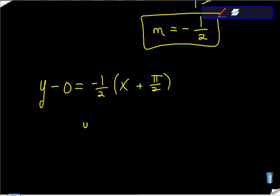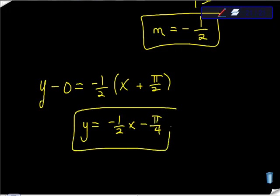I'm going to clean this up: y = -1/2x - π/4, and we did it. This is the equation of the line normal to f at that given point.